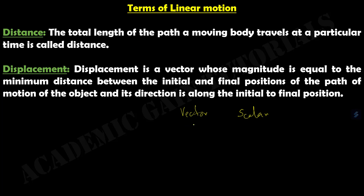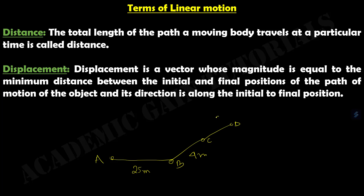The first term we will discuss is distance. The total length of the path that a moving body travels at a particular time is called distance. Suppose here A is a point. A person goes from A to B covering 25 meters, D to C covering 4 meters, C to D covering 20 meters, D to E covering 7 meters, and E to F covering 3 meters.